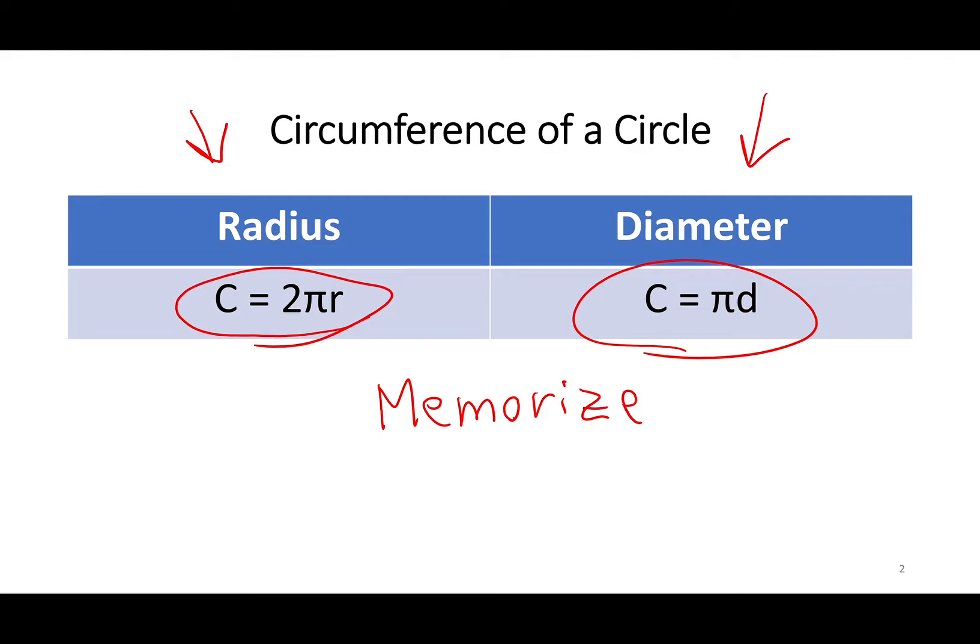Here you have C, circumference, equals 2 times pi times r. R is obviously radius. The formula with diameter is circumference equals pi times diameter. As you remember, your radius times 2 equals your diameter. That's why here you have 2r, because you need 2 times an r to equal one diameter.